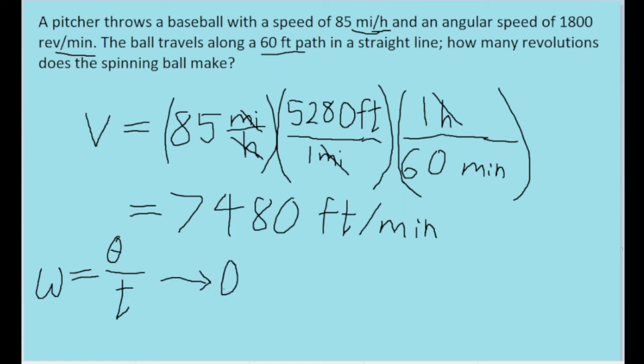Which will tell us that the number of revolutions, theta, is equal to the angular speed, omega, which is given to us, times t, the time. Only problem with this formula is that we don't have the time. So first we want to find some other way to get the amount of time.